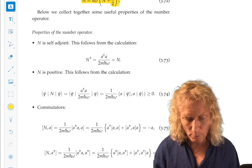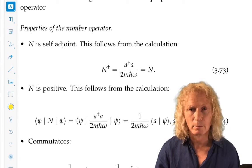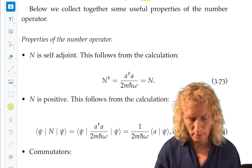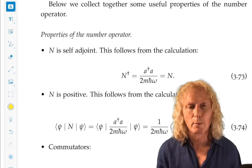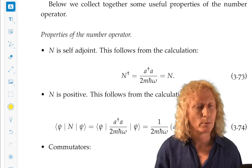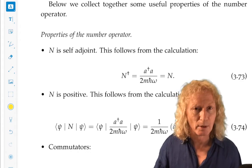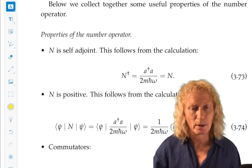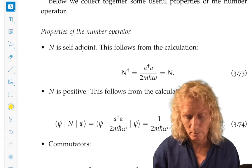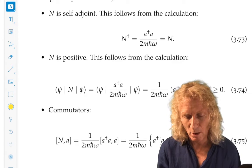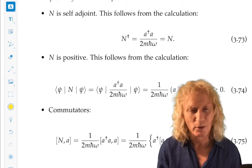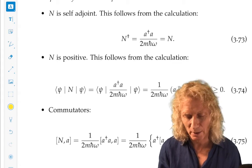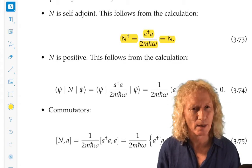Now we have several properties of the number operator that are going to be crucial that I've bullet pointed here. The number operator is self-adjoint. That's important because it means it has real eigenvalues and a complete set of eigenvectors. You can do this in your head using the definition of a and a dagger. So go back and think about that.